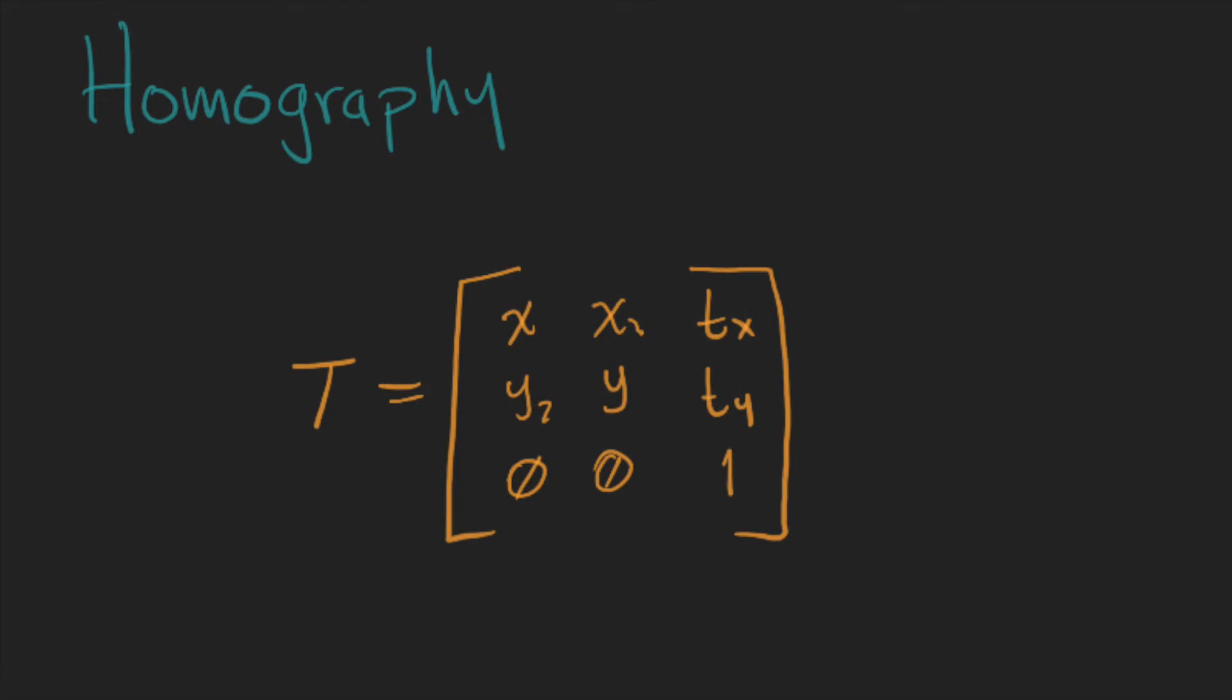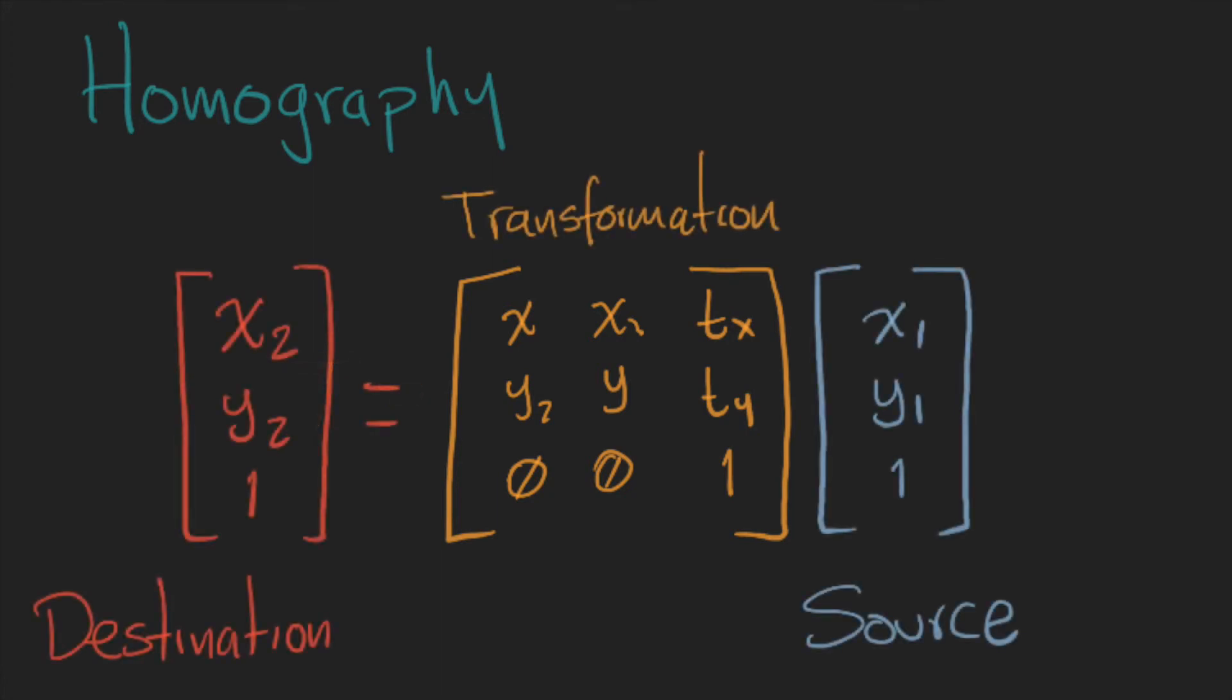Whatever is the case, we can apply a general solution to the problem. We have our definition of homography, in which a point xy in the source image is equal to a point xy in the destination image multiplied by a 3x3 transformation matrix that we don't know.